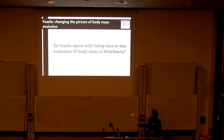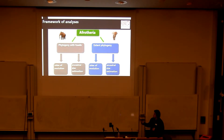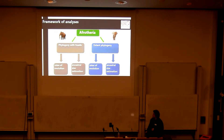So here we're interested in looking at this kind of pattern in Afrotheria and mammals. We took the Afrotheria, produced phylogenies both containing fossils and extant species only, and then using those two phylogenies compared how we can study things like rates of evolution and ancestral size estimation, which are typical things we'd look at with these kinds of methods.